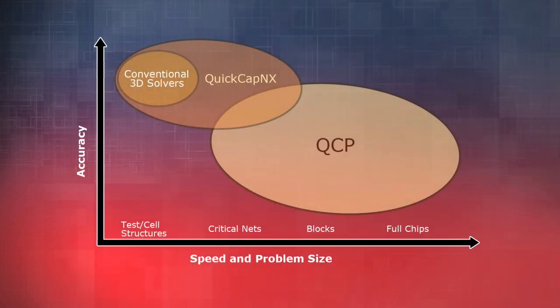Magma uses QuickCap, a 3D capacitance extractor. QuickCap itself uses a random walk technique — a technique that gives us advantages over classical techniques: advantages in speed, memory, and run time.